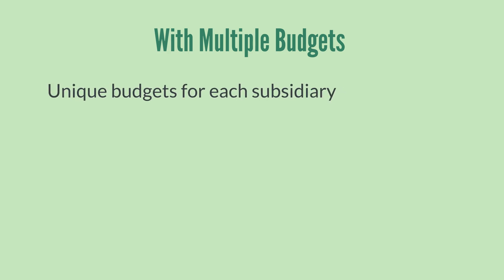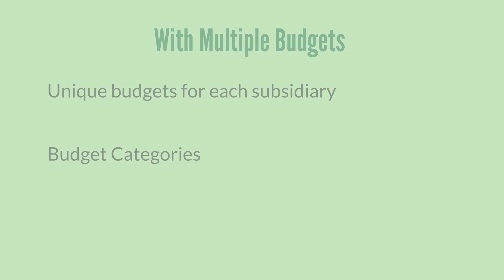First, you can create unique budgets for each of your subsidiaries. As you can imagine, this is essential for companies that have OneWorld. And second, multiple budgets allows you to use budget categories.